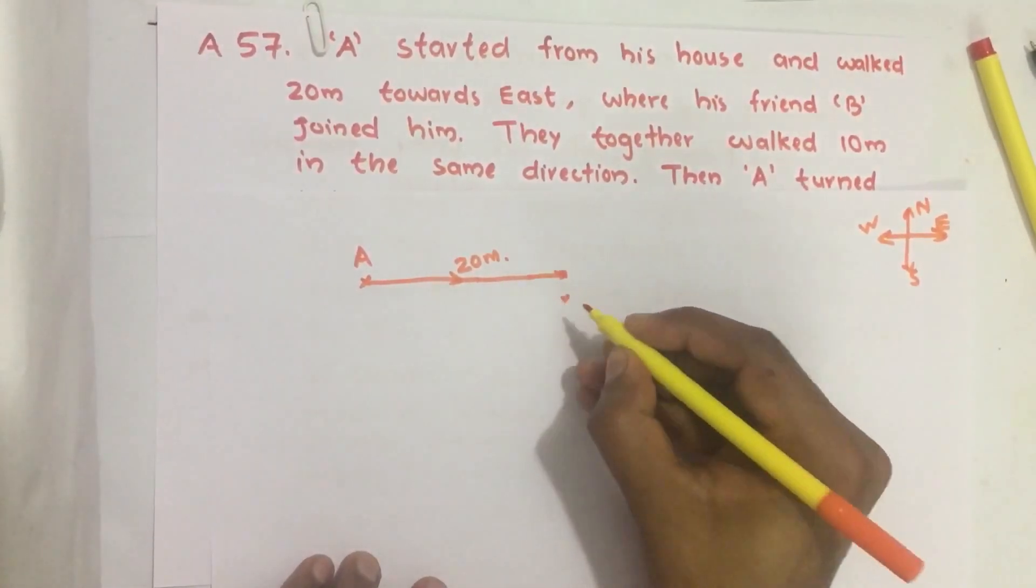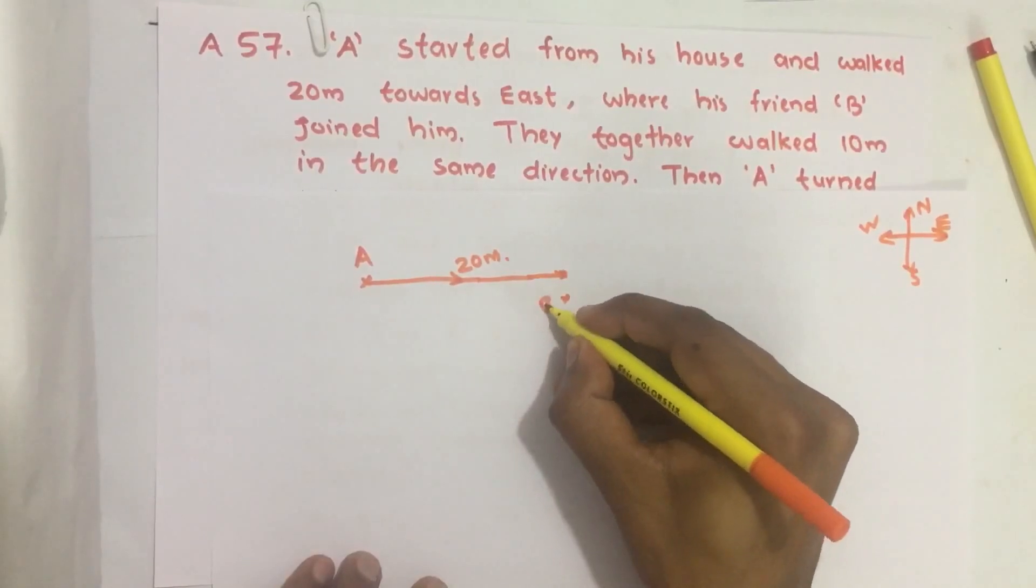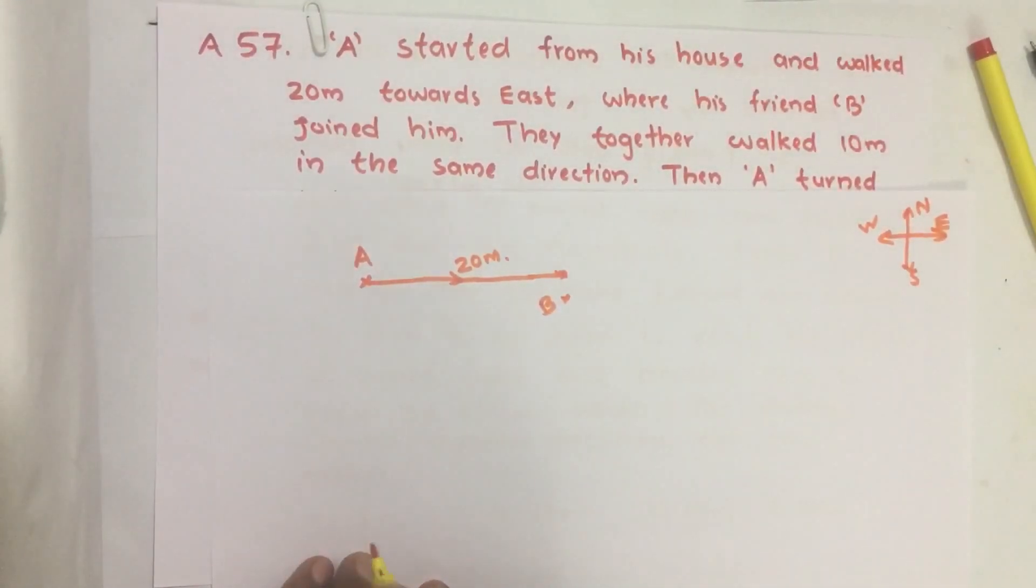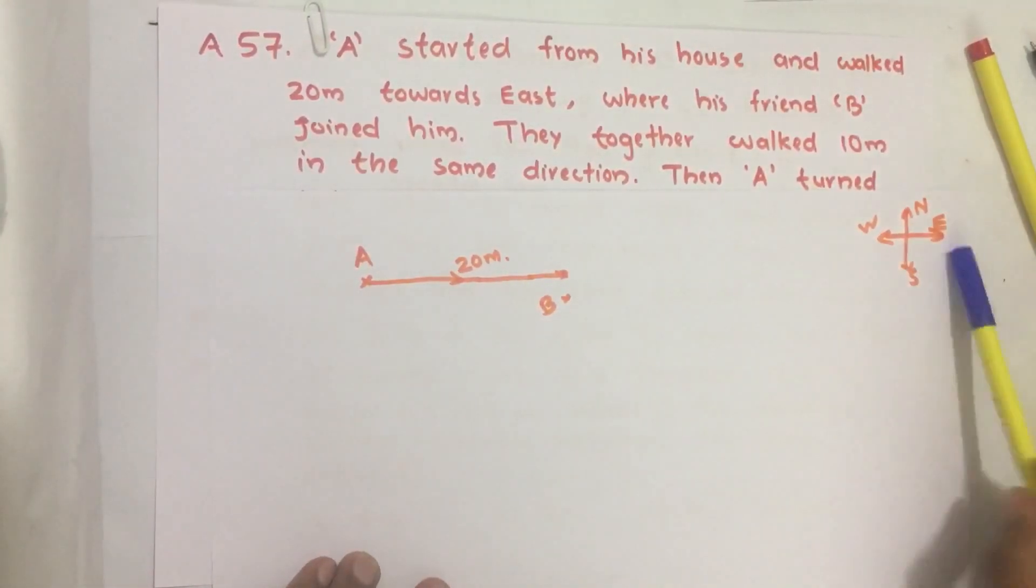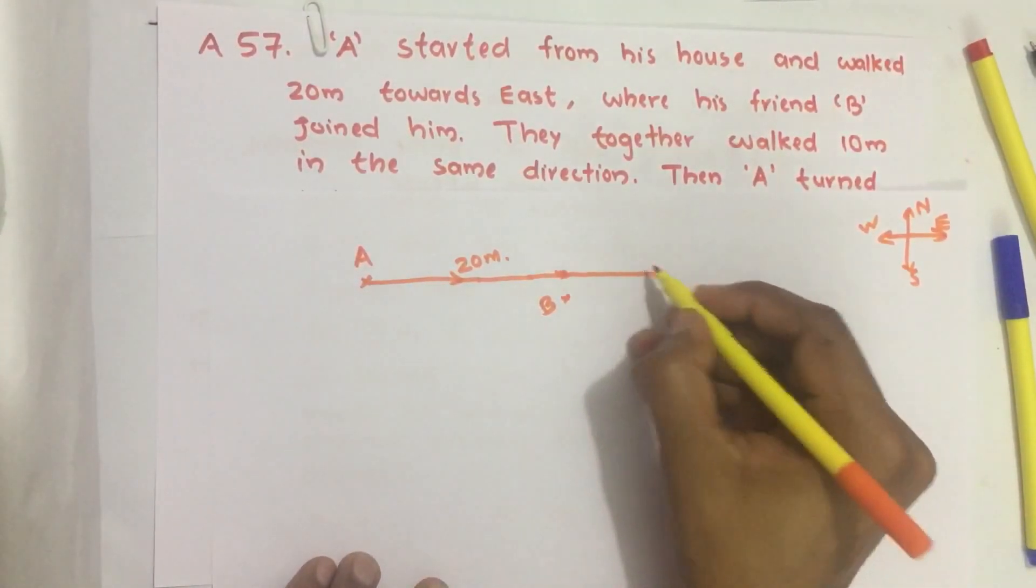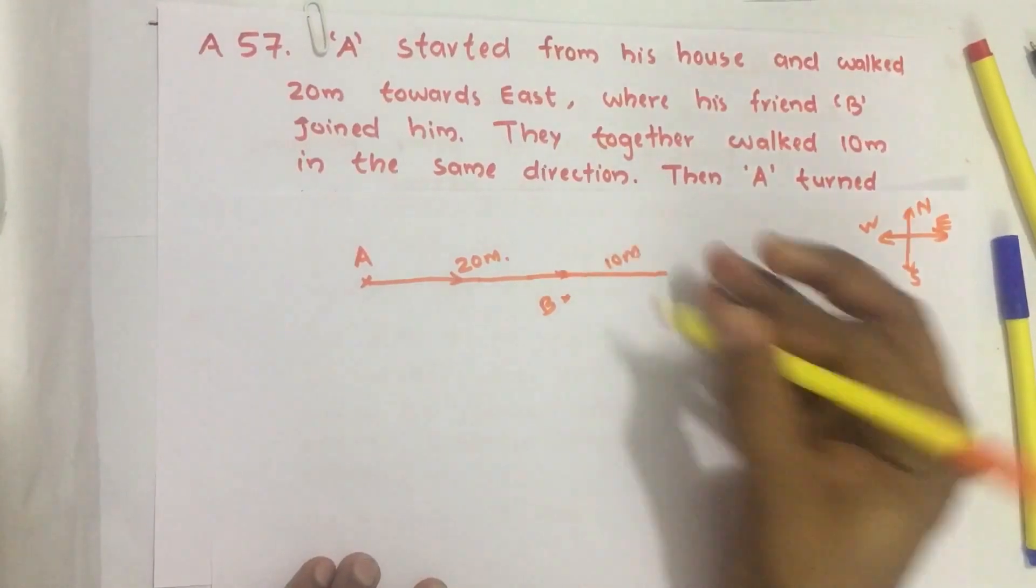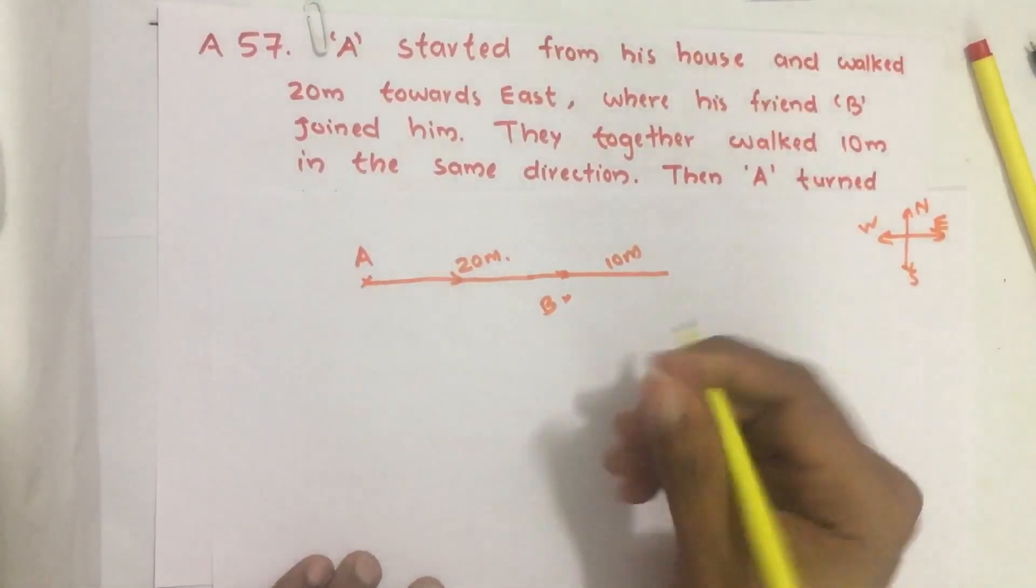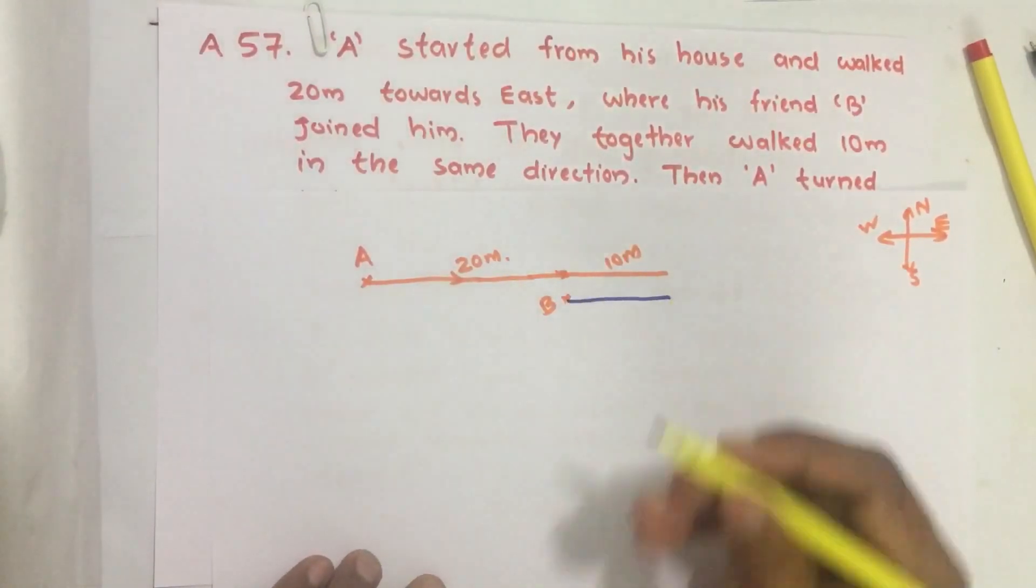From there he met his friend B. Then together they traveled 10 more meters in the same direction. They also traveled the same direction.